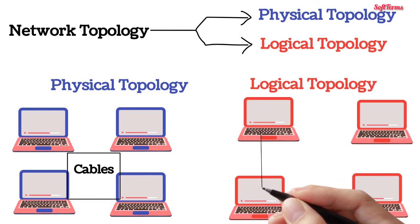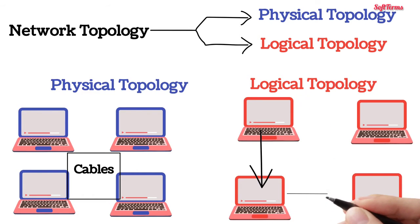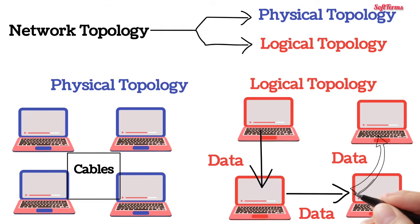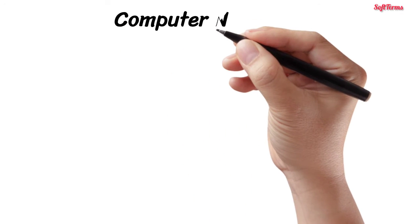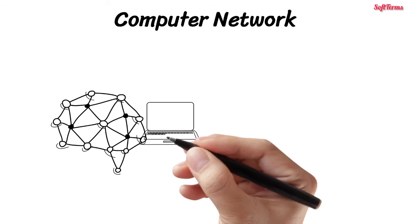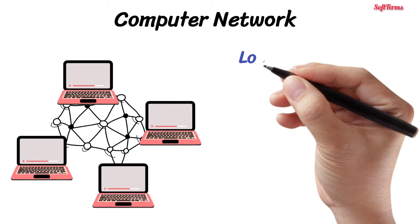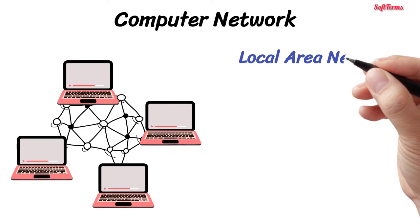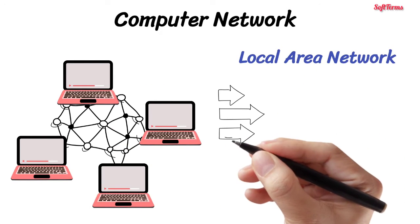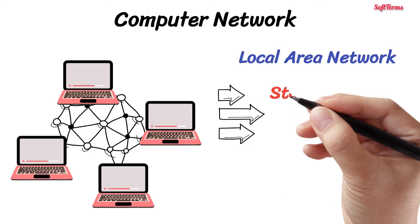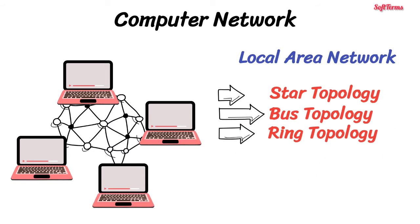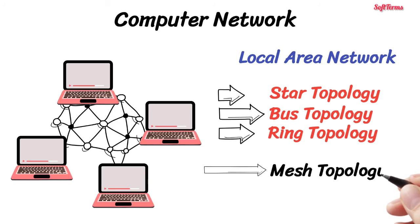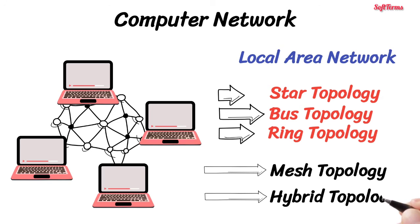Logical topology describes the way data flows from one computer to another within the computer network. The most common computer network used to interconnect physically distributed computers is local area network, which has three main topologies: star topology, bus topology, and ring topology. Others are mesh topology and hybrid topology.